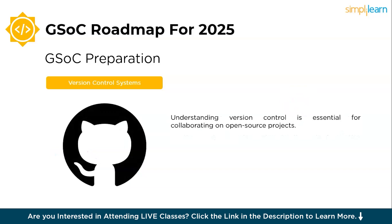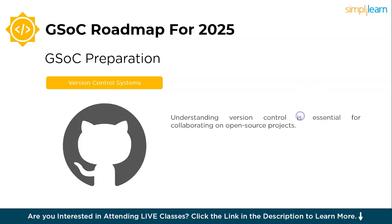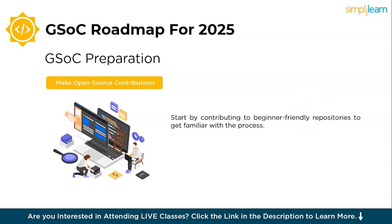Next is learning version control systems. Understanding version control is essential for collaborating on open-source projects. Learn how to use Git and GitHub for branching, versioning, making commits, and performing pull or push requests to contribute effectively to repositories. Next, learn to make open-source contributions. Start by contributing to beginner-friendly repositories and get familiar with the process. Contributions can include fixing bugs, improving documentation, or suggesting new features. Each step helps you build confidence and credibility.